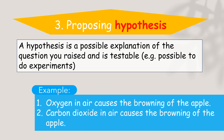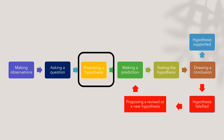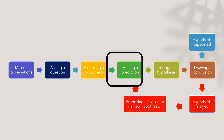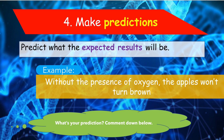After that, we move to step number four: predicting the expected results. For example, if you have the hypothesis that oxygen in air causes the browning of the apple, you can make a prediction that without the presence of oxygen, the apple won't turn brown.